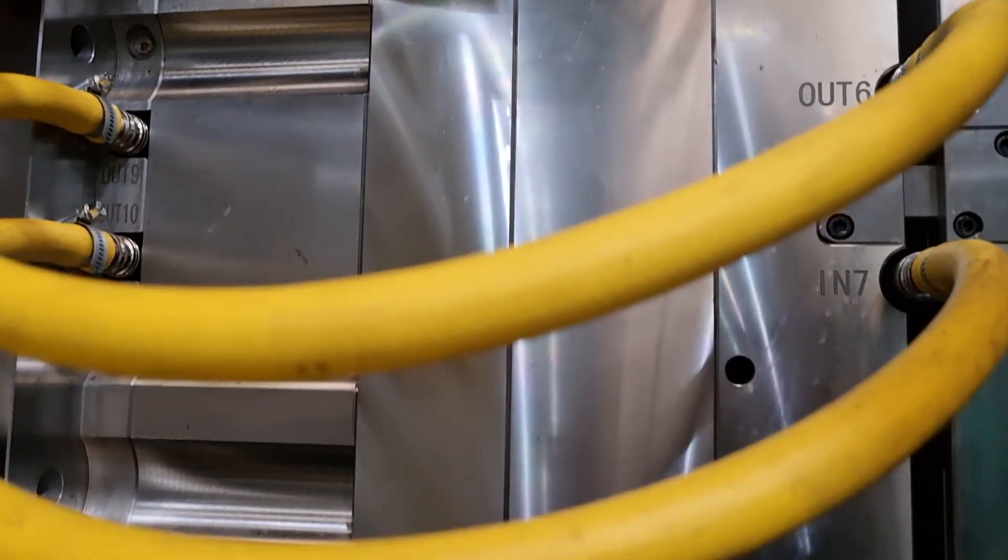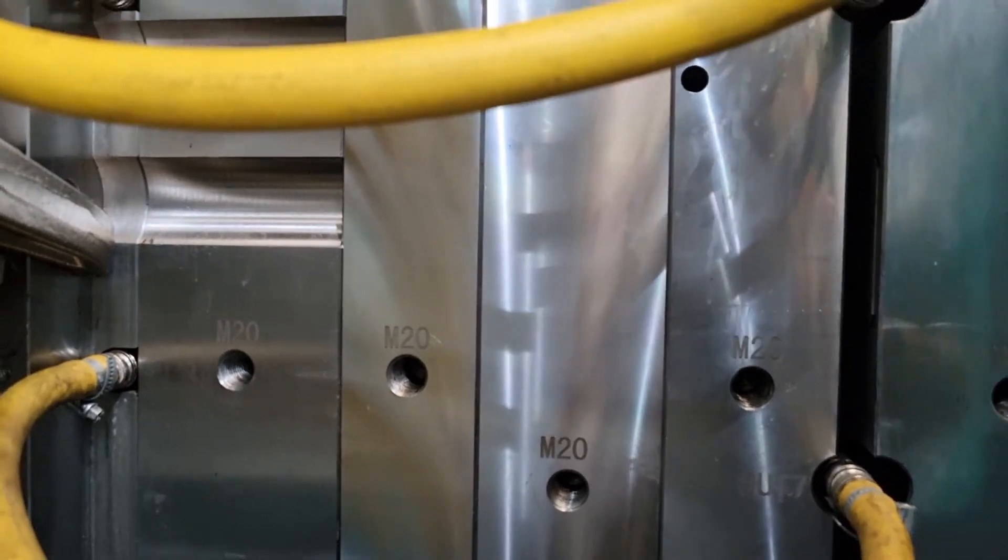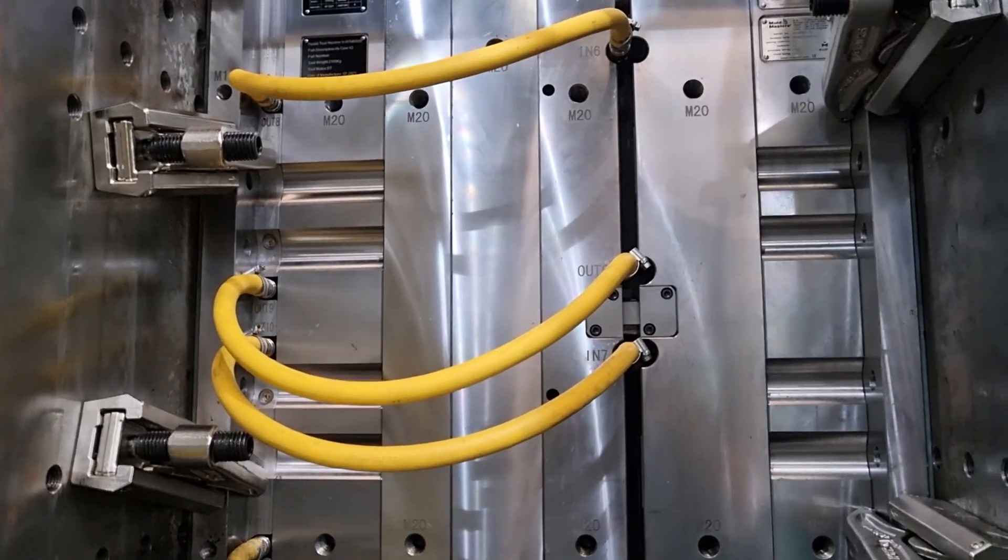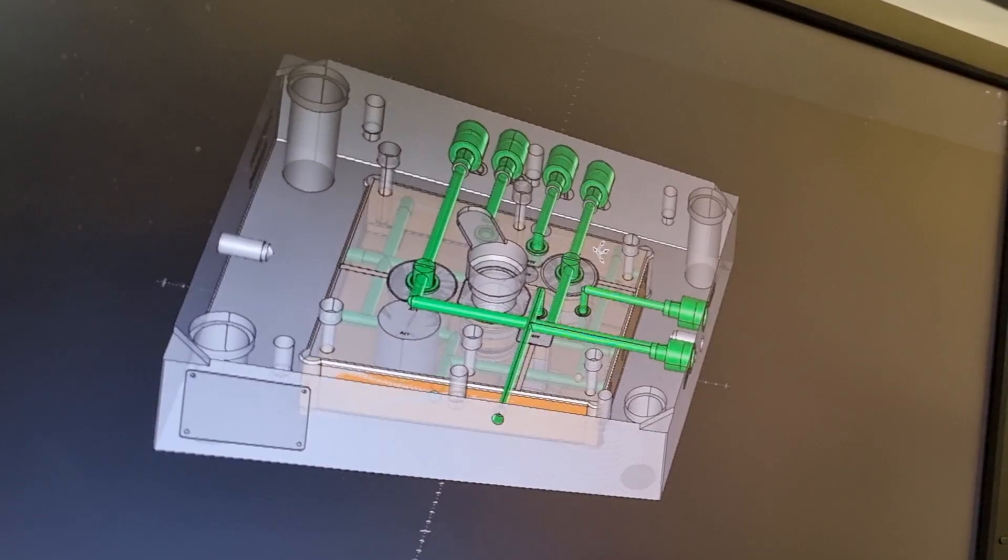The cooling circuit, as covered in a previous video, allows for heated or cooled water to run through key sections of the mold to evenly cool the part.